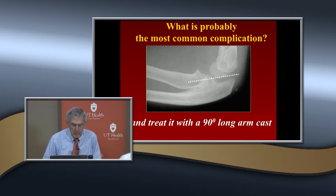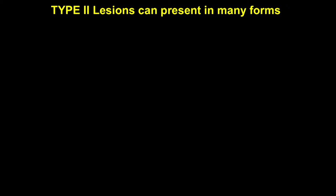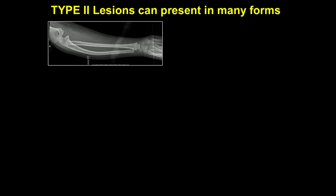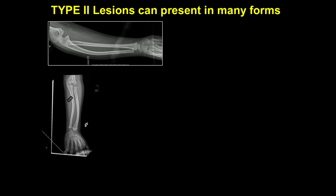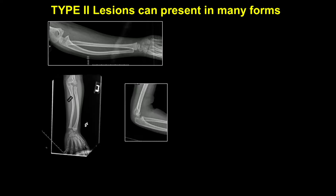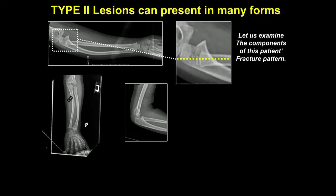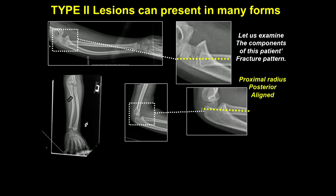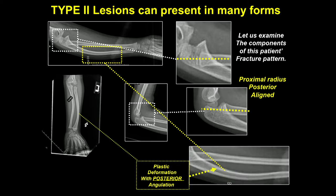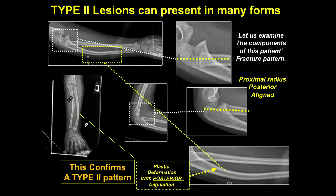The big problem is the failure to recognize the true nature of this fracture. Here it was posterior angulated but was treated with a long arm cast in flexion. Type 2 lesions can present in many forms. Here's a patient not initially recognized as type 2, but there are clues — a posterior apex mid-shaft ulna fracture, which is concerning for a flexion type injury, and the radial head looking a little bit posterior. The proximal radius is posteriorly angulated, with posterior plastic deformation — that confirmed it was a type 2 injury.